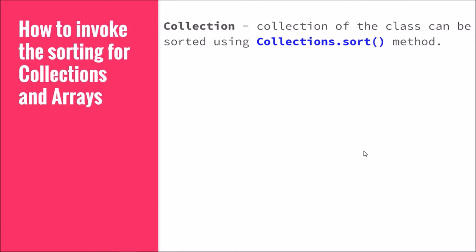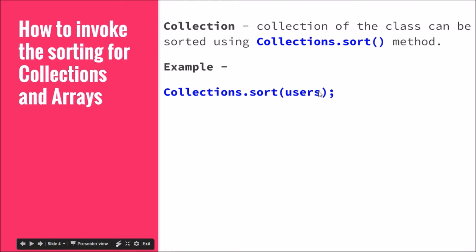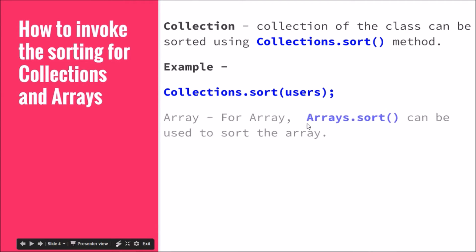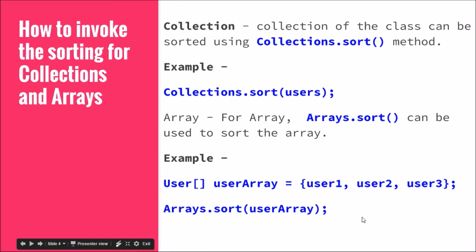To invoke sorting for collections, you call Collections.sort with the collection — which could be a list or set within the collection framework. For example, if 'users' is an ArrayList that implements Comparable, you call Collections.sort(users). If it is an array, you call Arrays.sort to sort the objects. For example, with a user array containing three user objects, you call Arrays.sort(userArray).